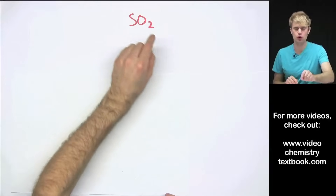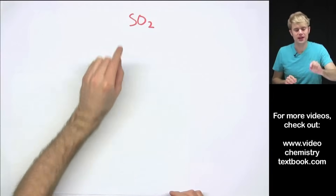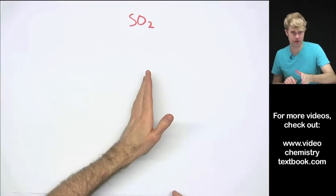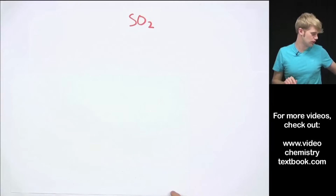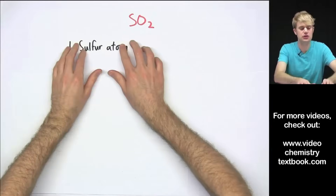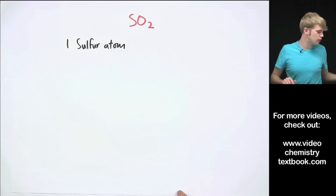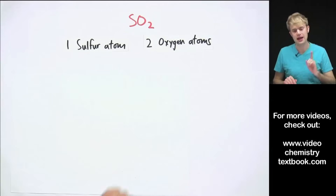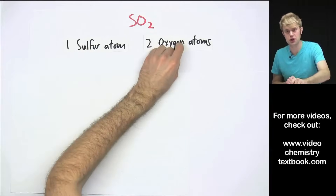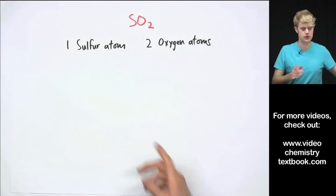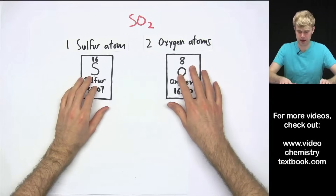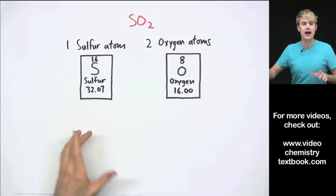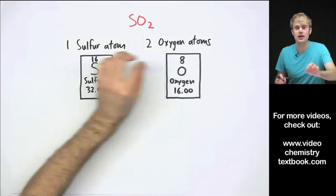Here's our first example: SO₂. To calculate the molar mass for this compound, we need to figure out how many of each type of atom there are in the chemical formula. We have an S without anything after it, so that means we have one sulfur atom. When you have a chemical symbol without anything after it, it means you have just one of them. Then we have O₂, which means we have two oxygen atoms. Now we need to figure out how much sulfur and oxygen atoms weigh, and we can do that from the periodic table.